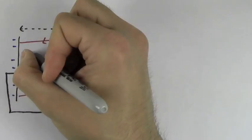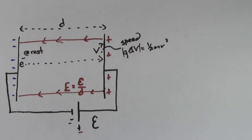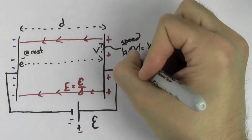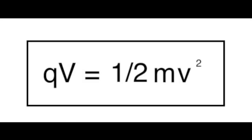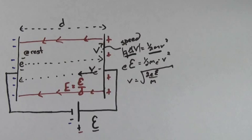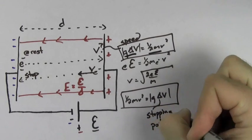If an electron starts at rest at the negative plate and flies over to the positive plate, you can solve for the speed that electron will have at the positive plate. The amount the potential energy goes down equals the amount the kinetic energy goes up. If you take the size of the charge times the size of the voltage drop and set that equal to one half MV squared, you can solve for the speed the particle will have at the other side. This is asked very frequently — the drop in electric potential energy, QV, equals one half MV squared. You can also run this in reverse: if the charge starts with a speed and kinetic energy, you can figure out how much voltage it would take to stop the charge — this is called the stopping potential.